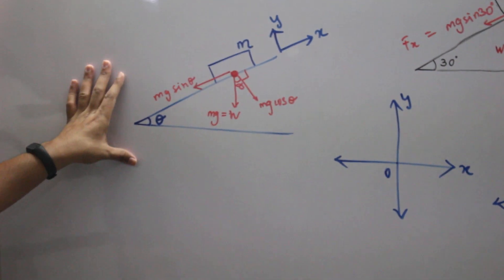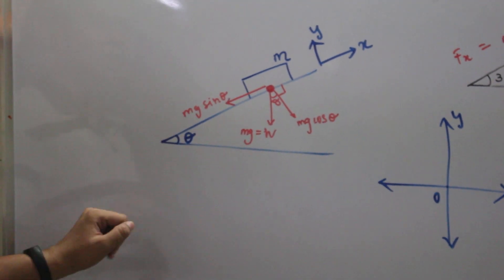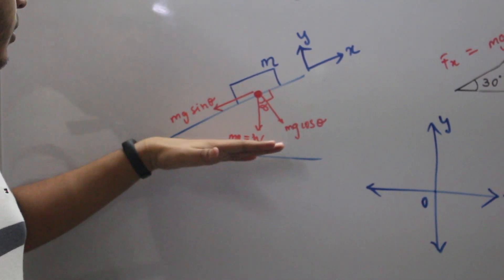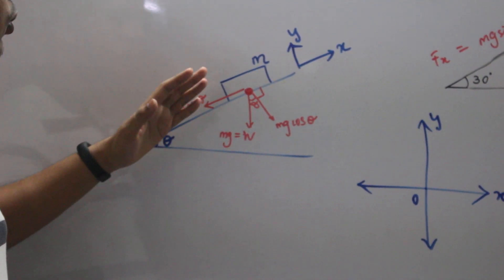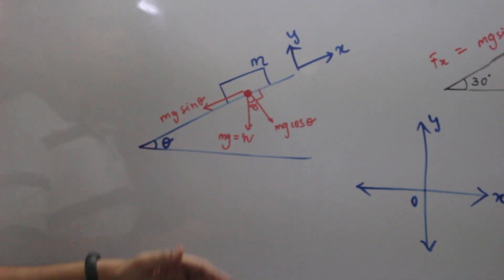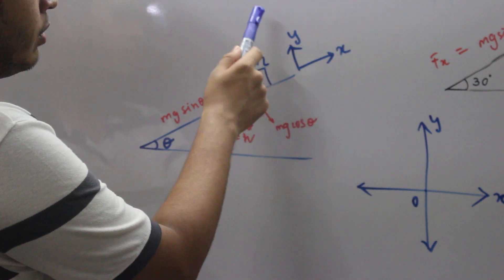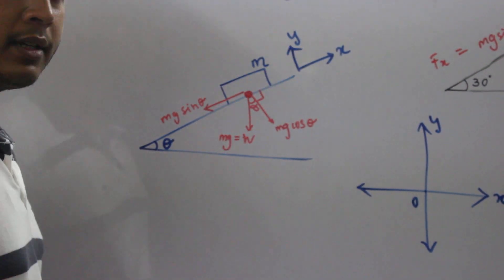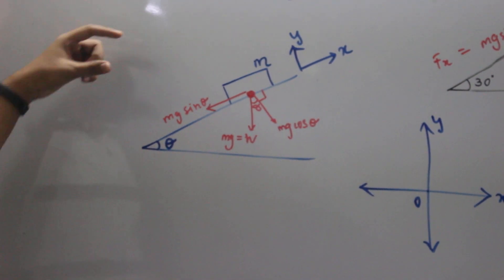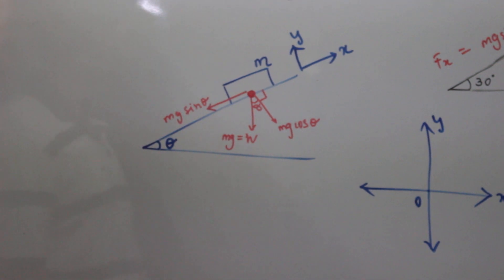Let's consider this example. Consider a surface inclined at an angle theta. Now you have an inclined surface at an angle theta. Along the inclined surface you have the x-axis and perpendicular to that you have the y-axis. Consider you have kept a mass m on that inclined surface.